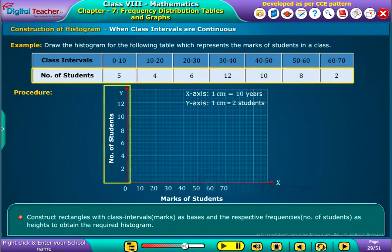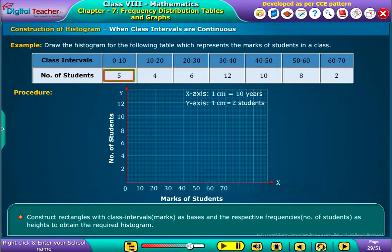Suppose here for the class intervals 0 to 10, the number of students is 5. So, make a rectangle with base 0 to 10 and height 5.